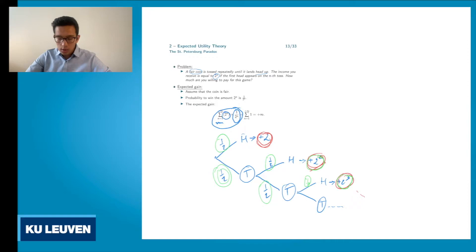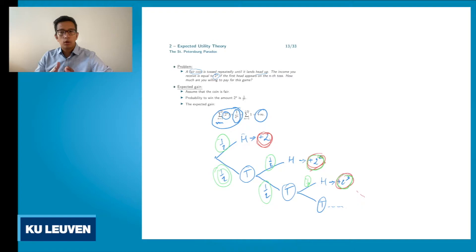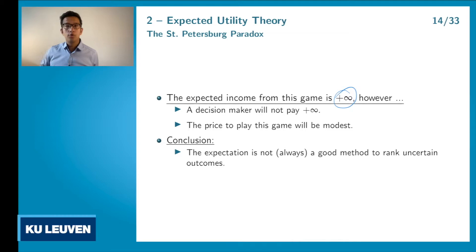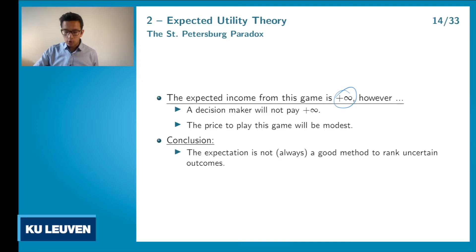So we have a game where you can earn money — sometimes a very low amount like $2, $4, or $8, but sometimes very high amounts if n is very large. On average, however, you get plus infinity. We have a game where the expected income is plus infinity. So the question is: are you willing to pay plus infinity, or at least a very high price like $100,000, to play this game? Most likely you are not.